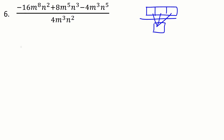So minus 16 divided by 4 leaves me with minus 4. m to the eight divided by m to the three leaves me with m to the five. n squared divided by n squared goes away. Now the next term — still divided by this — so 8 divided by 4 leaves me with a positive 2. m to the five divided by m cubed leaves me with m squared, and we'll get one single n there. Then the last one: minus 4 divided by 4 leaves me with just a minus 1. m cubed divided by m cubed cancels out to one, and n to the five divided by n squared leaves me with n cubed. So that is our final answer. This shows a little bit less work, but if you do it correctly you'll still get to the same final answer. Use both methods at your discretion.